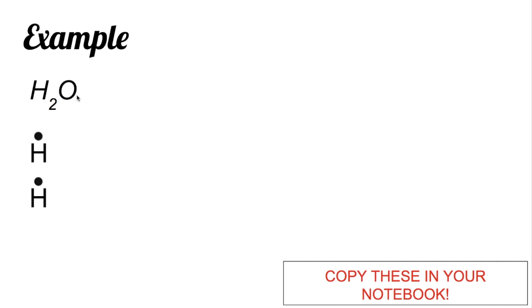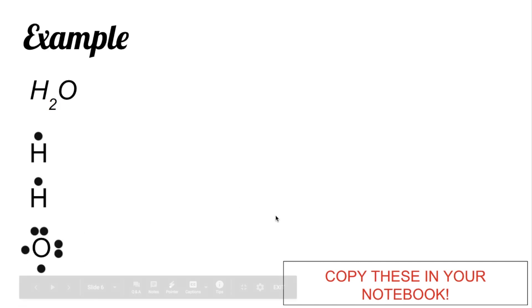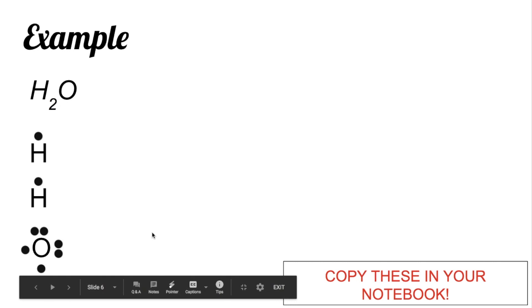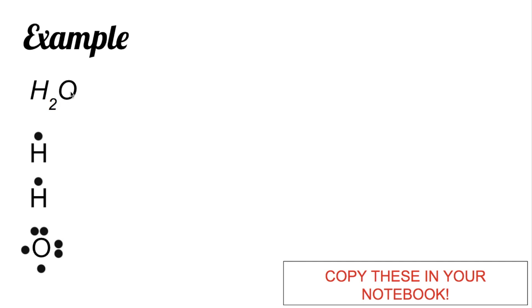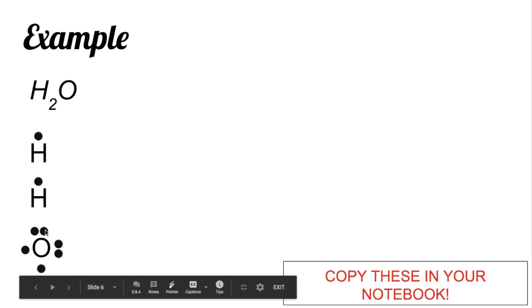The second element we have is oxygen. As you check in your periodic table, oxygen belongs to group 6A, so it should have six valence electrons. When you write the dots representing valence electrons, you should start from top, right, bottom, left, then start pairing them up so that we have some uniformity.